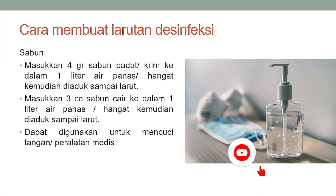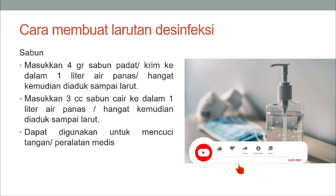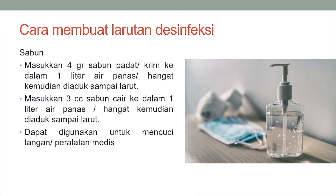Cara membuat larutan desinfeksi. Yang pertama, sabun: masukkan 4 gram sabun padat atau cream ke dalam 1 liter air panas atau hangat, kemudian diaduk sampai larut. Atau masukkan 3 cc sabun cair ke dalam 1 liter air panas atau hangat, kemudian diaduk sampai larut. Dapat digunakan untuk mencuci tangan atau peralatan medis.